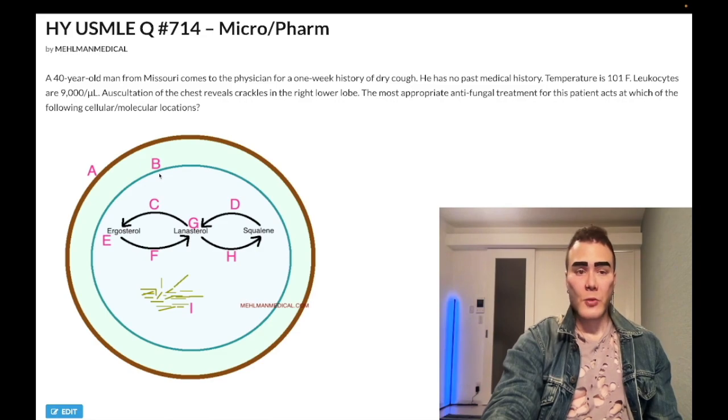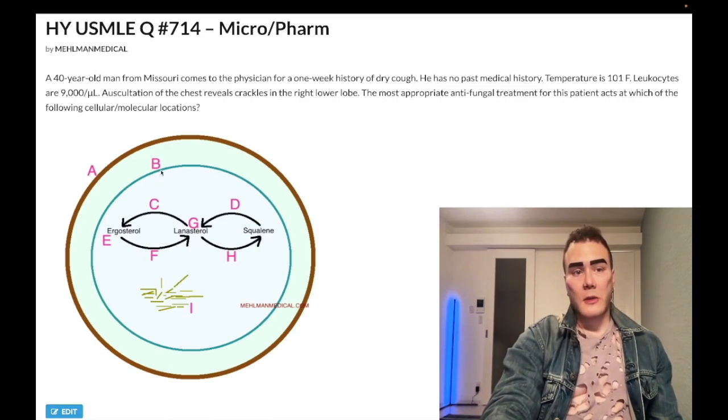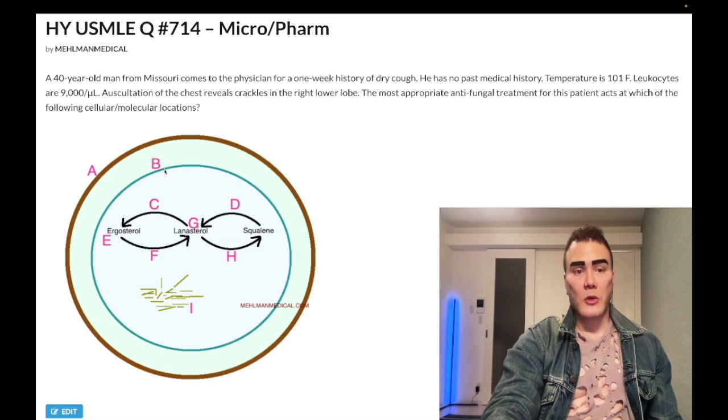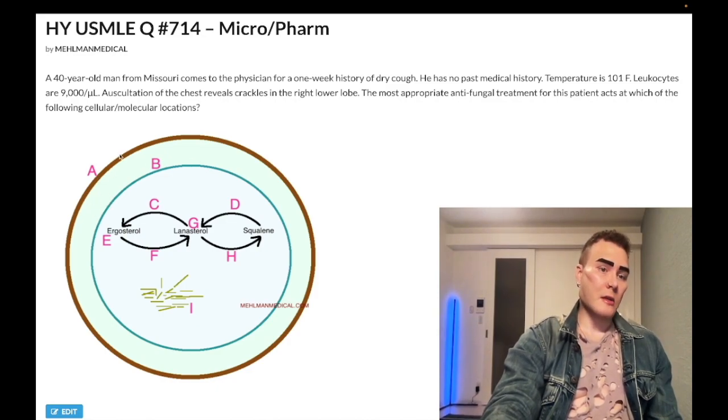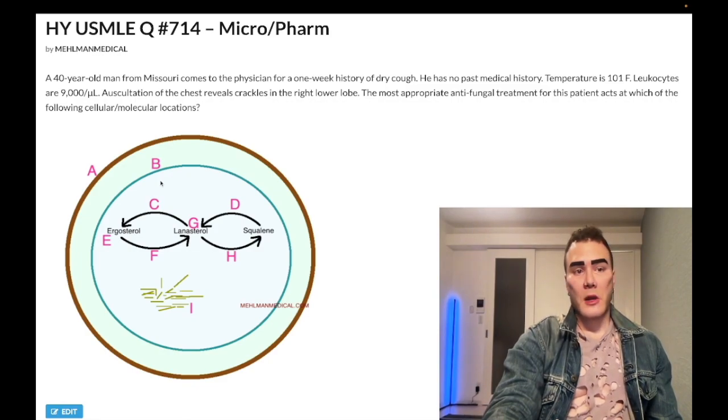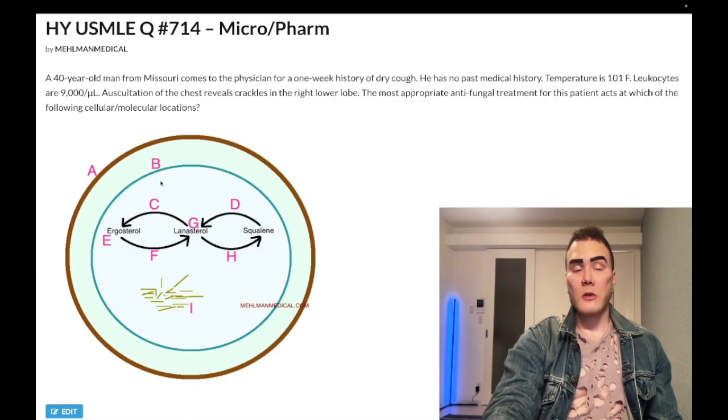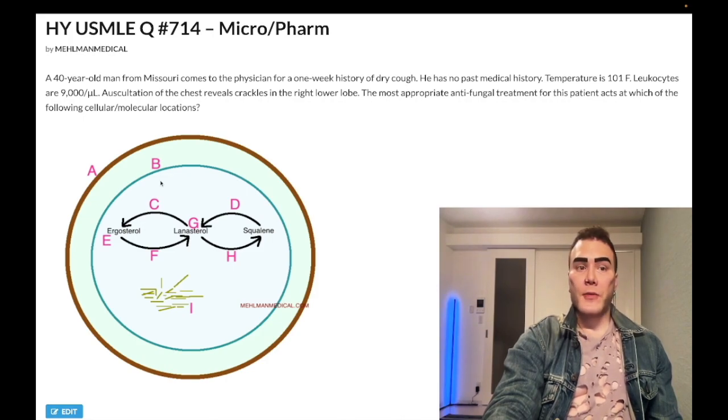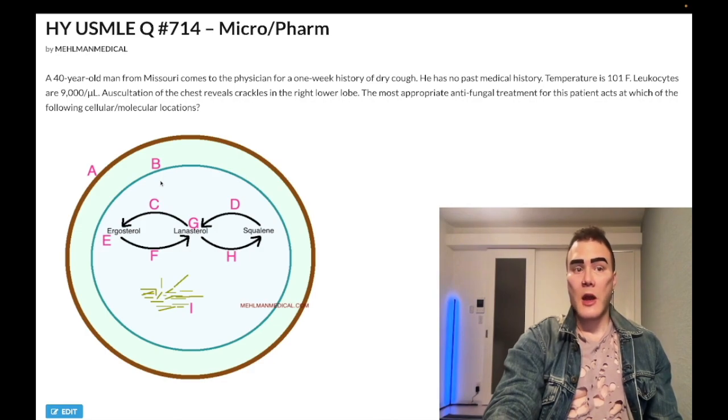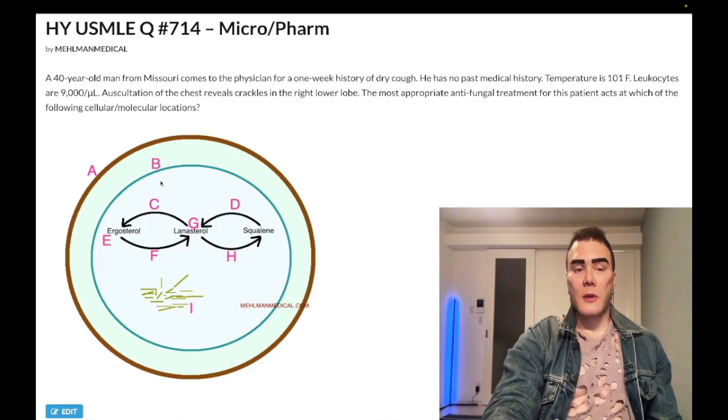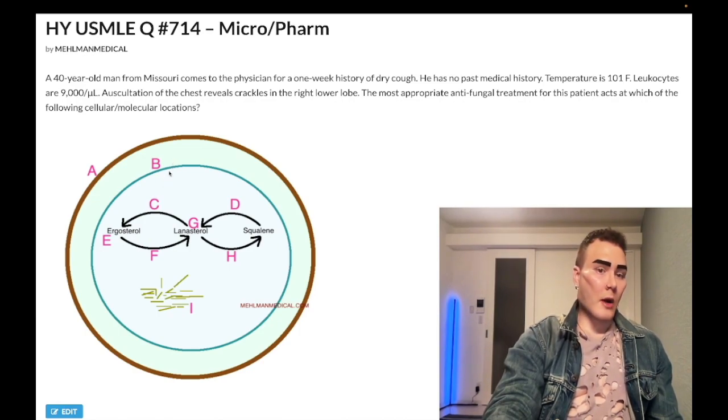Choice B, wrong answer, refers to amphotericin B and nystatin. Amphotericin B and nystatin both poke holes in the ergosterol cell membrane. You can see choice A is cell wall, it's thicker. Choice B is cell membrane here. Amphotericin B is a hard-hitting antifungal, used as last resort for disseminated fungemia. Rigors, chills, high fever, generally over 103. Also for CNS fungal infections, cryptococcus neoformans meningitis. Nystatin is used topically for vaginal candidiasis, also used as a mouthwash for oropharyngeal candidiasis. Wrong answer.